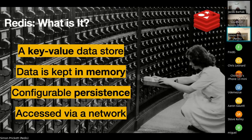Redis is a type of data store known as a key-value store. Instead of having tables and SQL queries, we have keys, and those keys contain values. Think of Redis like a card index system — like the one shown here from the Library of Congress in DC in the 1970s — where each white label on a drawer is a key, and that's the bit of information you need to retrieve data. Generally with a key-value store, if you don't know the key, you're not going to be able to retrieve the information. We'll also show something today where you can use Redis in a more SQL-like way.